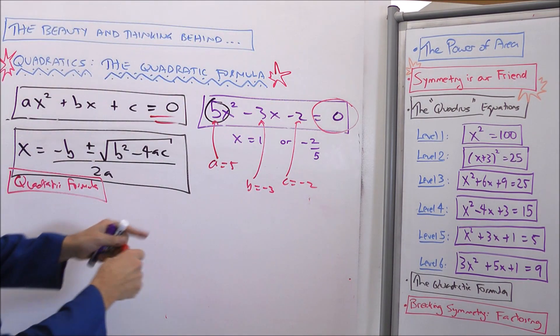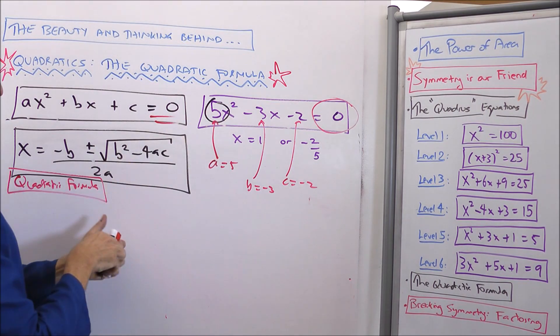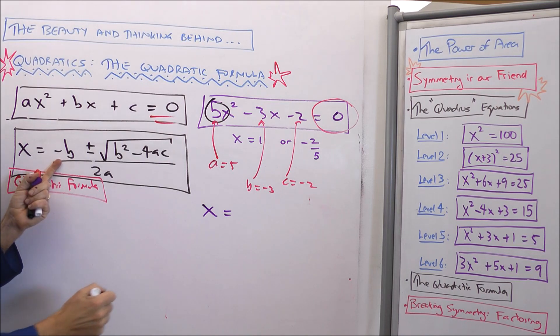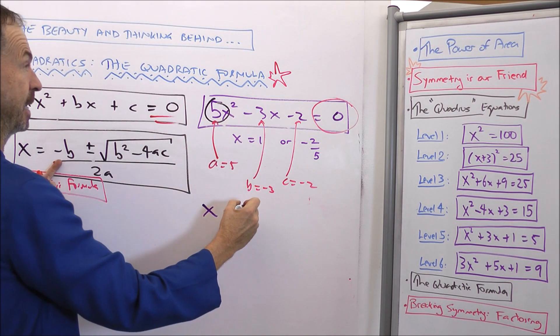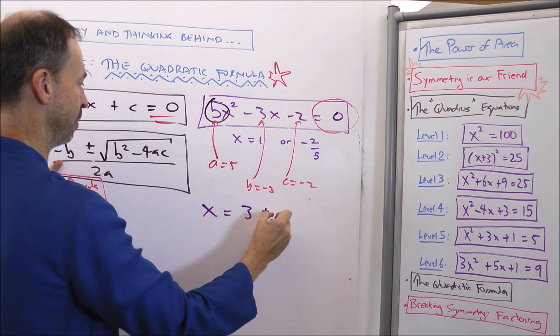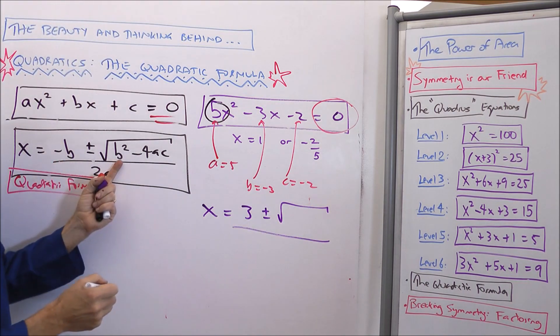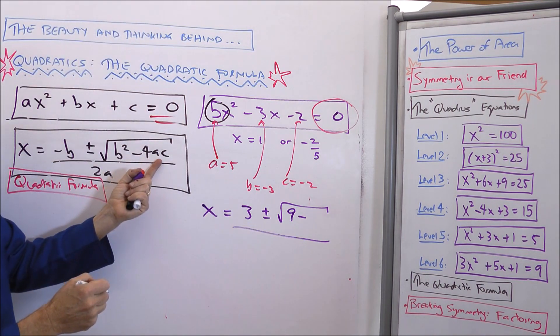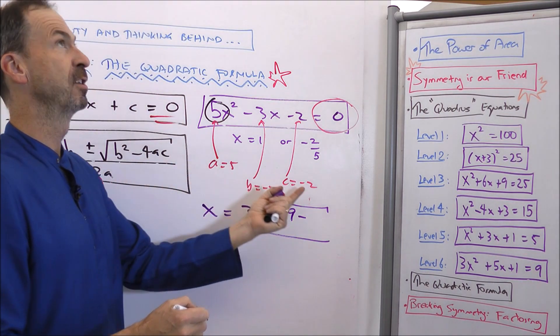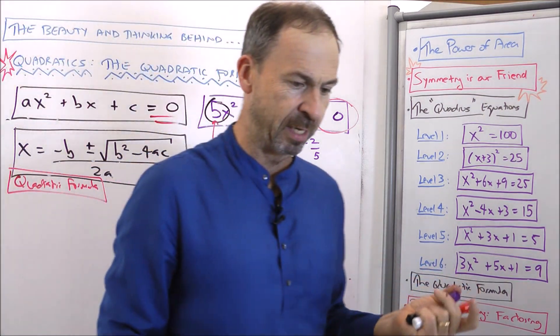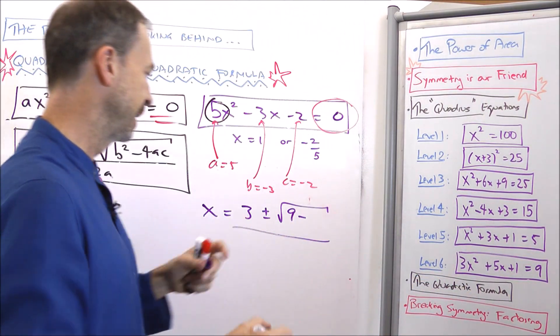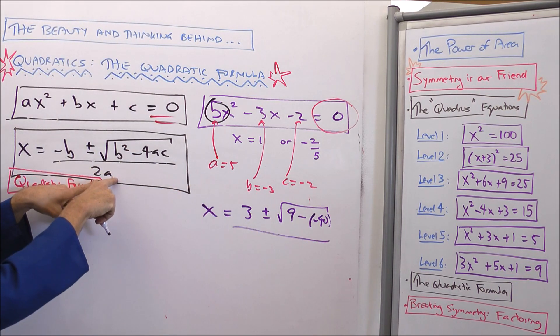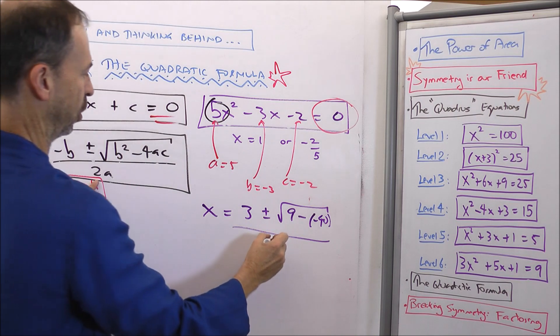So according to the formula, this equation in purple has solution. X would be negative b. What's b? It's negative 3. So negative negative 3 is 3 plus or minus the square root of b squared. Negative 3 squared is 9 minus 4 times a times c. 4 times 5 times negative 2. 4 times 5 is 20 times negative 40. All over twice a, twice 5. All over twice 5 is 10.